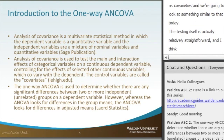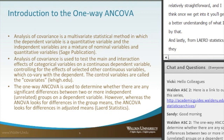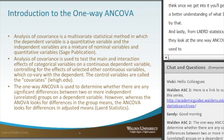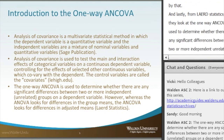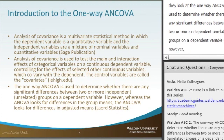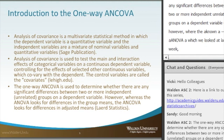And lastly, from Laird Statistics, the one-way ANCOVA is used to determine whether there are any significant differences between two or more independent, unrelated groups on a dependent variable. However, where the ANOVA — which we covered in the previous session — looks for differences in mean groups, the ANCOVA looks for differences in adjusted means.